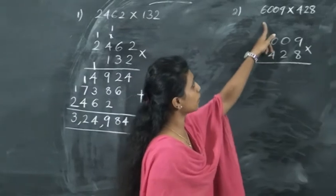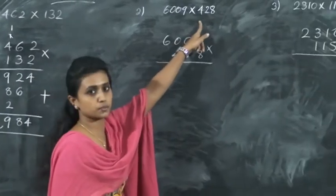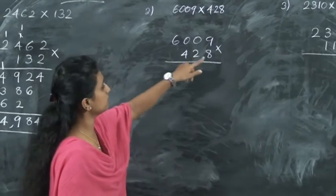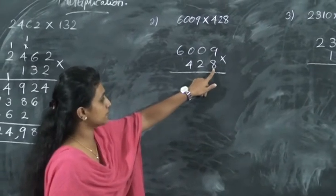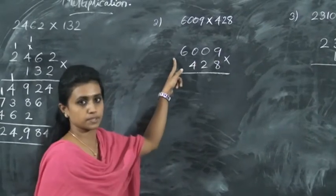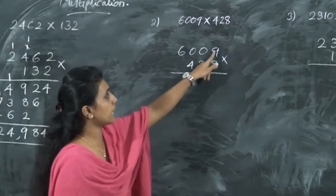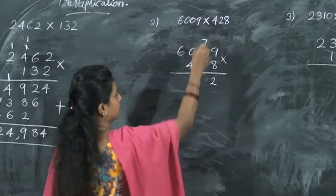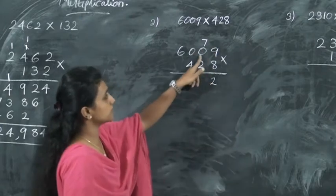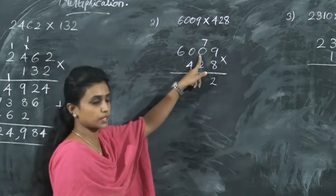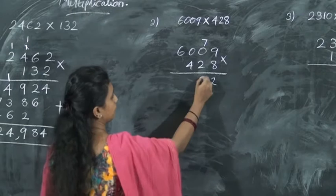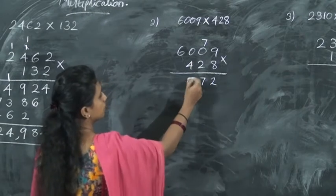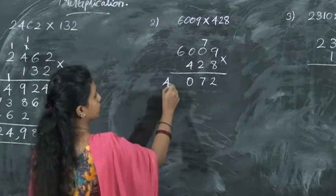Now let's do the second one. We want to multiply 6009 by 428. Let's write the numbers in columns. We want to multiply this 8 with all these numbers. 8 nines are 72 — write 2 here, 7 is carried over. Then 8 zeros are 0 plus 7 is 7. Again 8 zeros are 0. Then 8 sixes are 48.